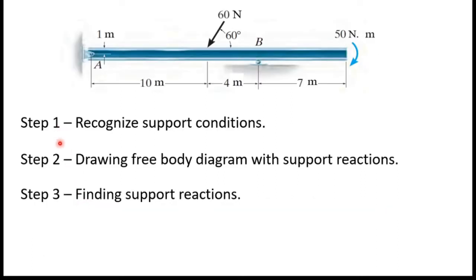There are three steps. Step one is recognizing support conditions. In our problem there are two support conditions: A and B. A is a pin support and B is a roller support.